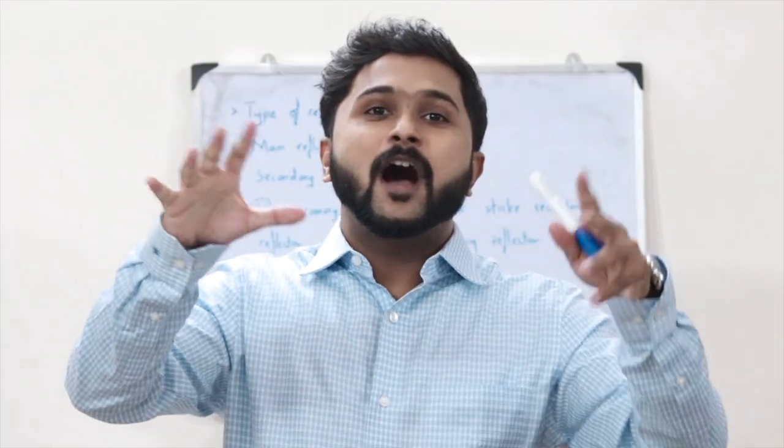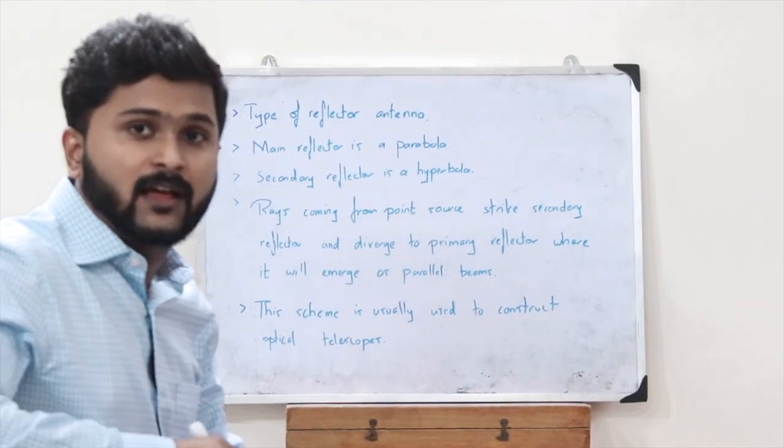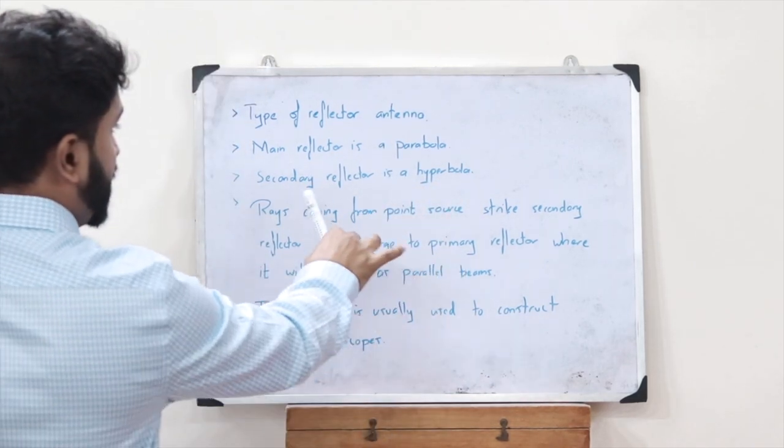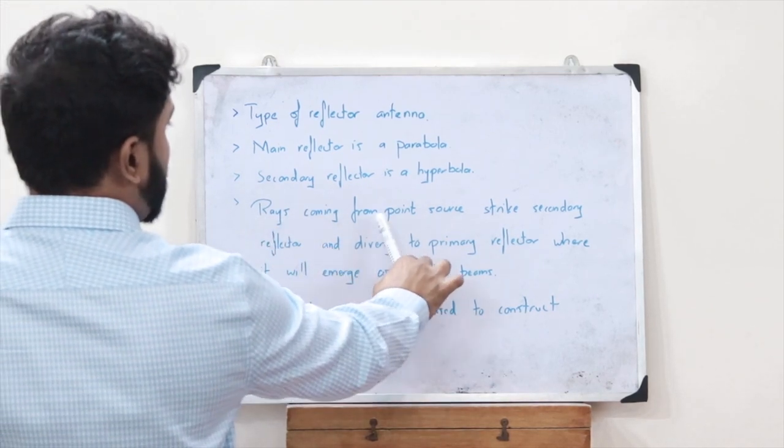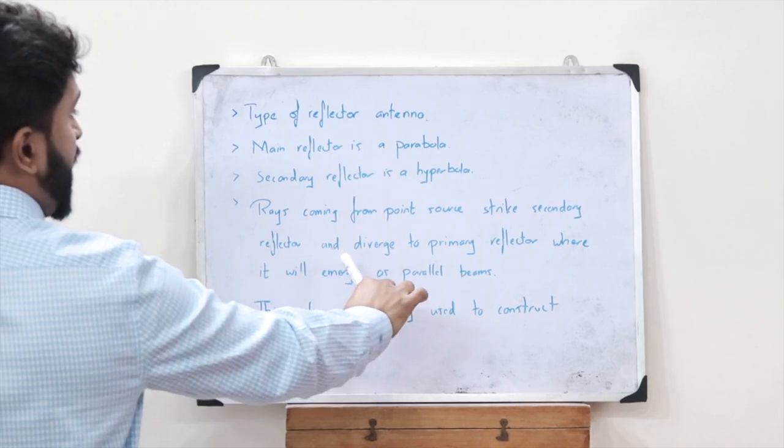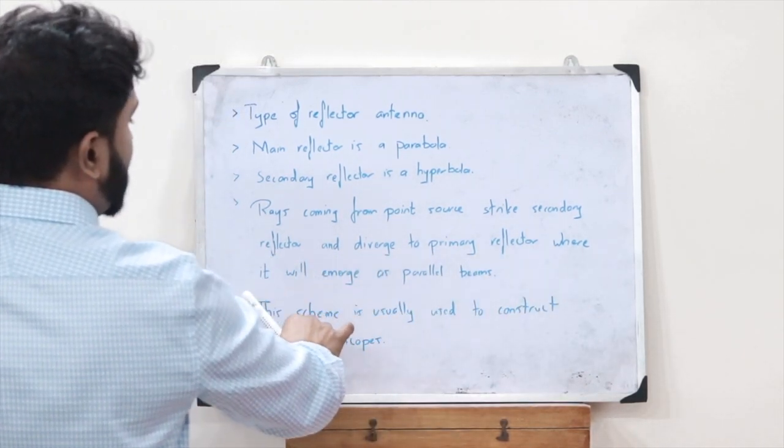It is a type of reflector antenna where the main reflector is a parabola and the secondary reflector is a hyperbola. Rays from a point source strike the secondary reflector and diverge to the primary reflector where they emerge as parallel beams.